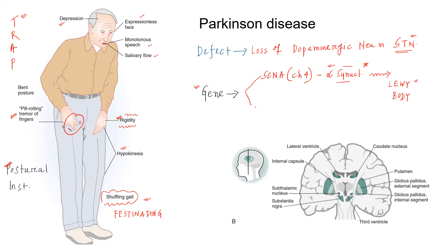There is another gene known as LRRK2 — leucine-rich repeat kinase 2. Mutation in this gene is the most common cause of autosomal dominant Parkinson's disease. So while SCNA mutation causes autosomal dominant Parkinson's disease, LRRK2 gene mutation is the most common cause of autosomal dominant Parkinson's disease.